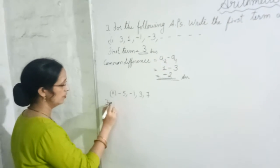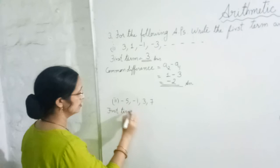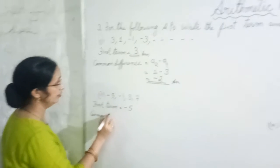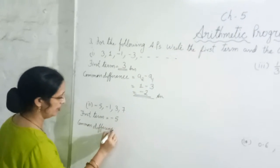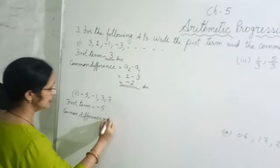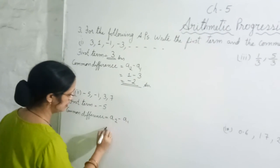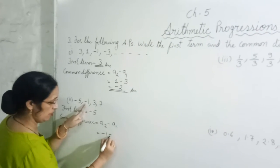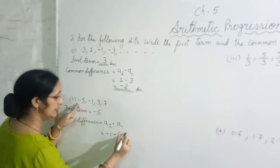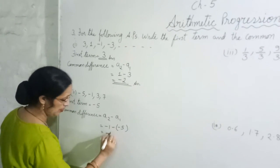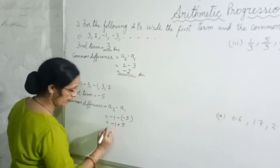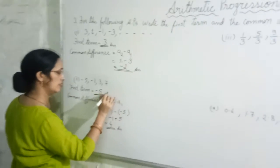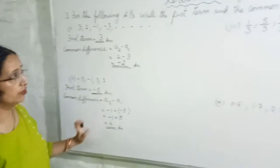Similarly in this question, the first term is equal to minus 5. The common difference is the second term minus the first term: minus 1 minus (minus 5), which gives minus 1 plus 5, so the common difference is 4. Be very careful about the signs.